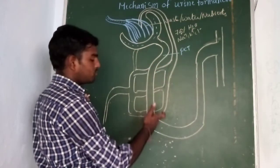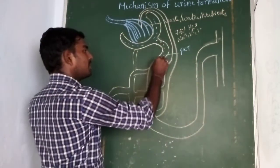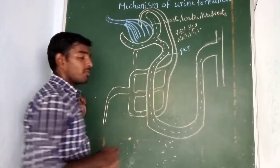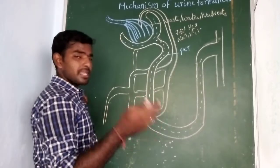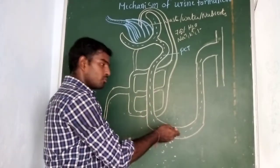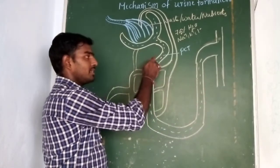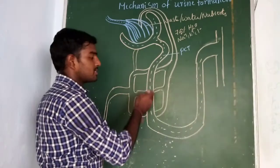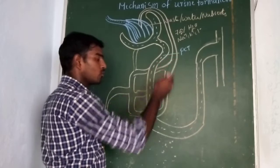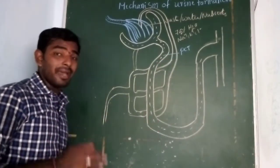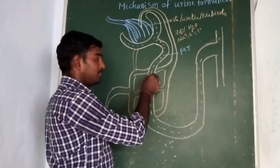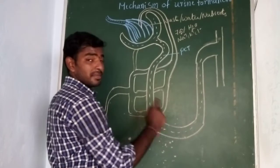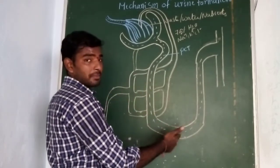Once reabsorption is completed, blood flows through the loop of Henle and the DCT. The loop of Henle and DCT come under tubular secretion, where the peritubular network secretes waste materials like urea, uric acid, creatinine, and some salts like Na⁺, K⁺, and Cl⁻. Out of the 75% of water reabsorbed in the PCT, 10% of that water moves from the PCT to the loop of Henle by the process of osmosis, and salts like Na⁺, K⁺, and Cl⁻ are also secreted, moving to the DCT.